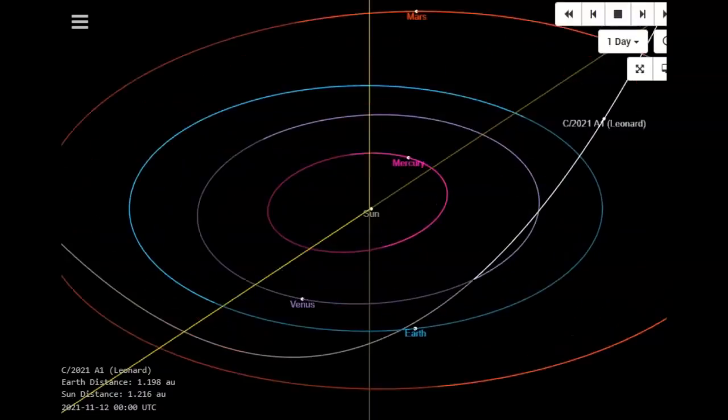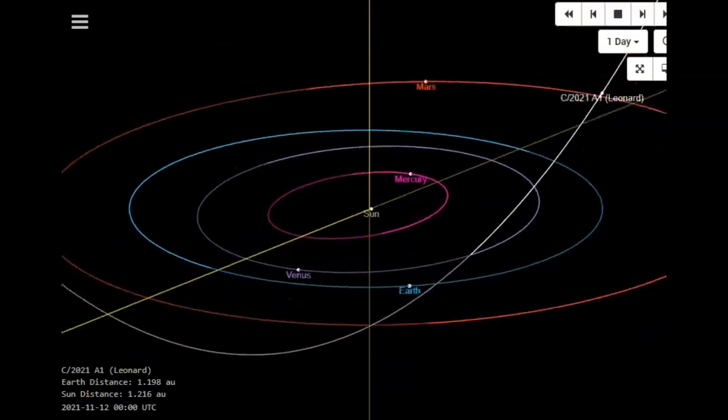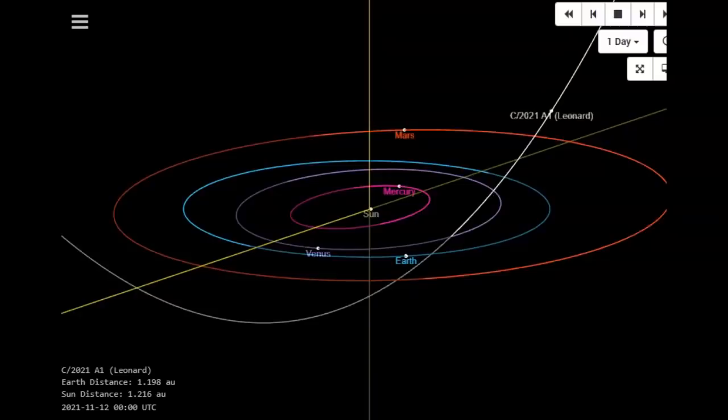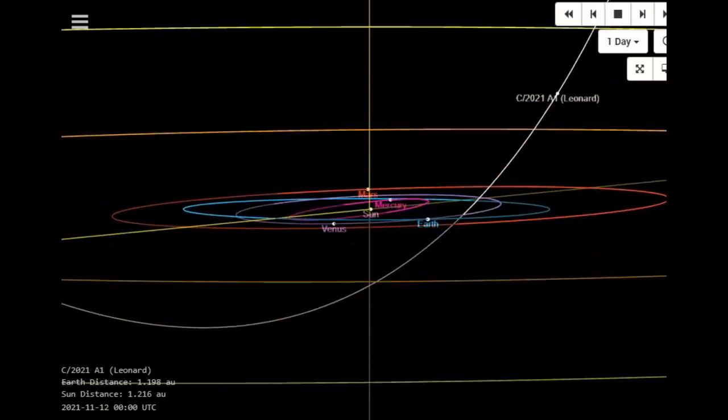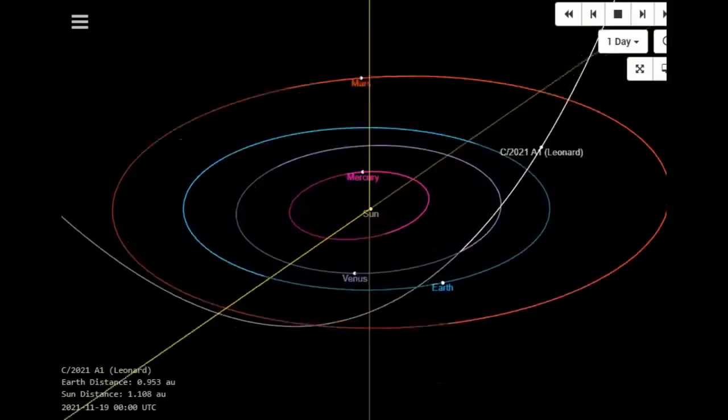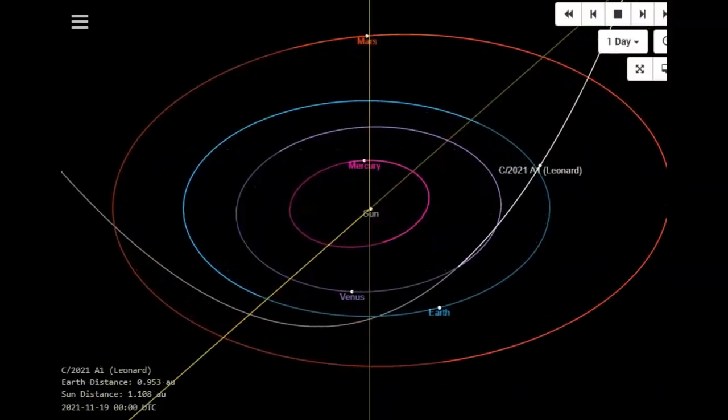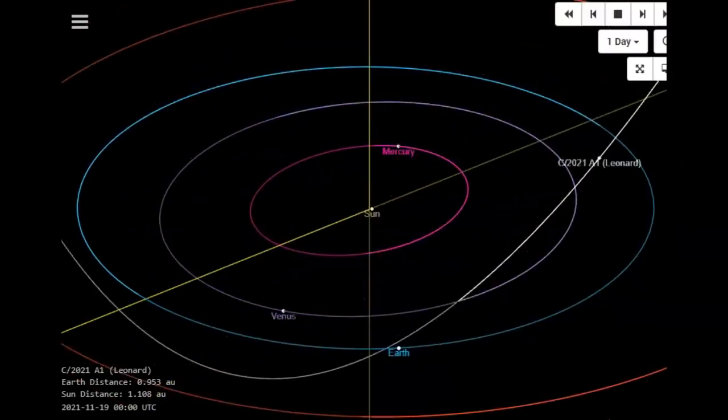This chart only goes up to a four. The same phenomena happened with Comet McNaught. Here's the JPL modeling on it as I pull it up. Earth is in the blue line, Venus purple, Mercury in pink, and Mars is in red. These are the orbits, the sun's in the center, Comet Leonard is in the white line.